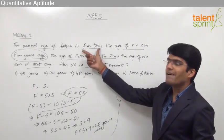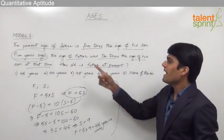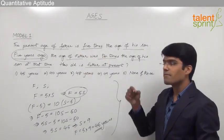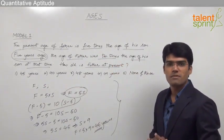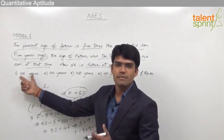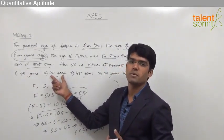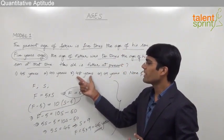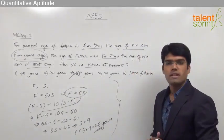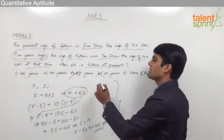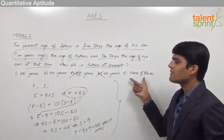From the first statement, father's age is 5 times the son's age, so father's age must be a multiple of 5. Looking at the options: 45 is a multiple of 5, so it's a possible answer. 40 is also a multiple of 5, so it's also possible. But 48 is not an exact multiple of 5, so it can be eliminated. And 49 is also not a multiple of 5, so it gets eliminated too. The possible answers are option 1, option 2, or option 5 — none of these.